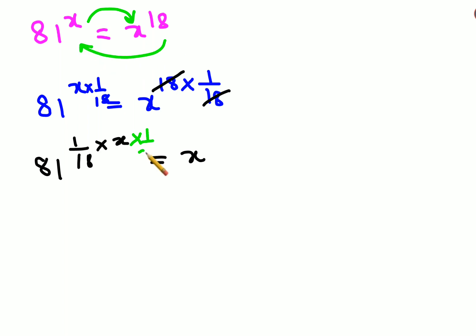Taking the x through on both sides, this and this gets cancelled. So now I'm just left with 81 raised to 1 upon 18 and here I'm left with x raised to 1 upon x.